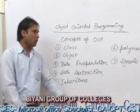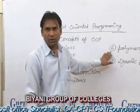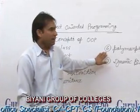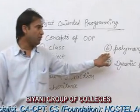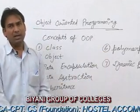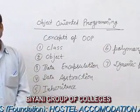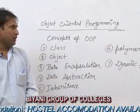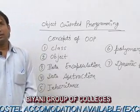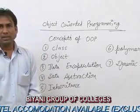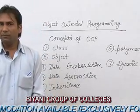The next concept is polymorphism. It is the main concept of object-oriented programming. Polymorphism is derived from the Greek word 'poly', which means many, and 'morphos' means forms — that is, the ability to take more than one form. So we can define polymorphism as the use of the same name in more than one form.